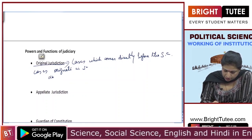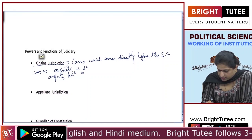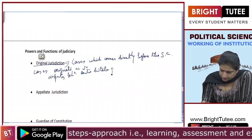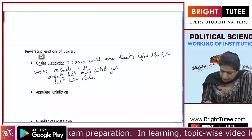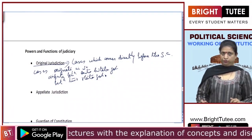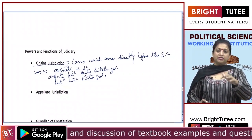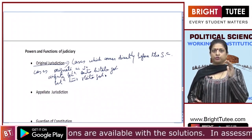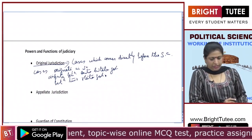Cases heard directly by the Supreme Court under original jurisdiction include disputes between the central government and state governments, between two state governments, and between citizens and the government. For example, the matter of 27% reservation directly went to the Supreme Court because it involved citizens and the government, giving the Supreme Court original jurisdiction over that matter.